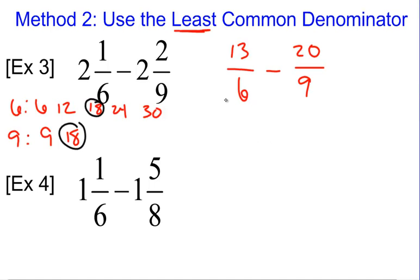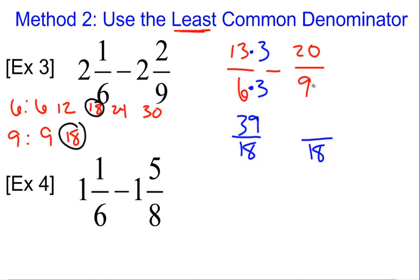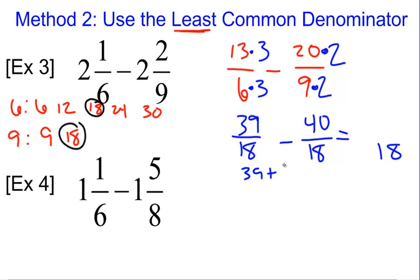Whatever it takes to multiply 6 to reach 18, we're going to do that — and we know our denominator is 18. To get from 6 to 18, we multiply by 3. Whatever we do to the denominator, we do to the numerator, so 13 times 3 is 39. To get from 9 to 18, we multiply by 2, so 20 times 2 is 40. So we have 39 eighteenths minus 40 eighteenths. Denominators stay the same — keep, change, opposite. 39 plus negative 40: 39 good guys, 40 bad guys, you're left with one bad guy. So your answer is negative 1 eighteenth.